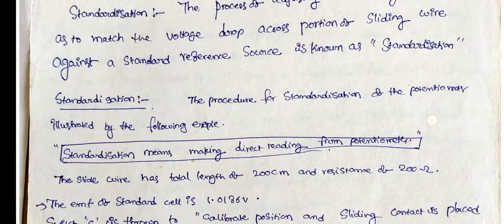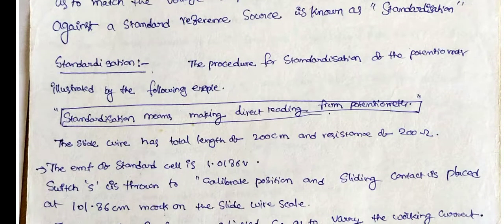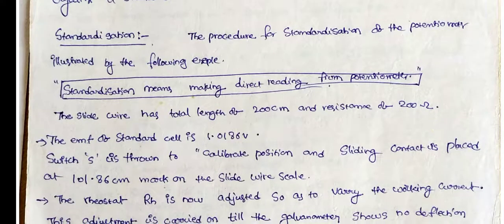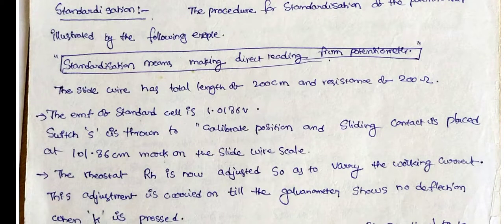Standardization means making the potentiometer a direct-reading instrument. By adjusting until the standard cell voltage equals the voltage drop, we can then take direct readings from the potentiometer without additional calculations from dial settings.